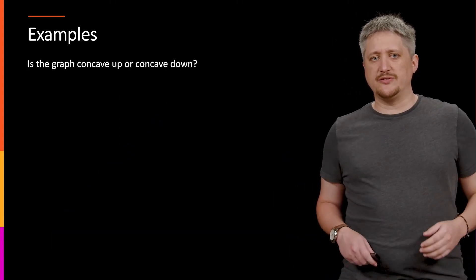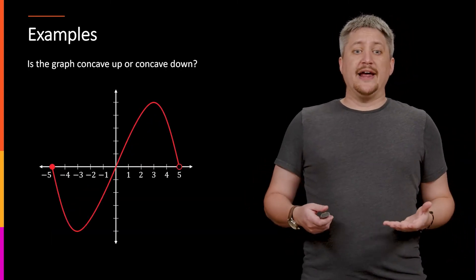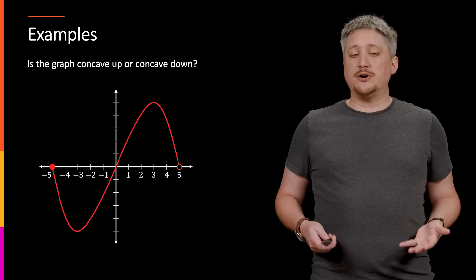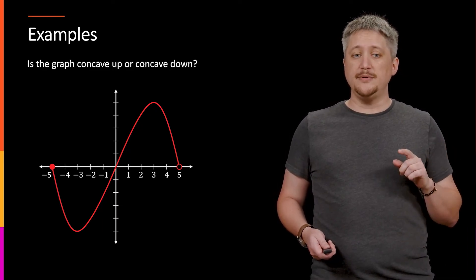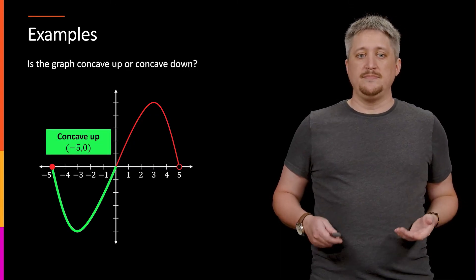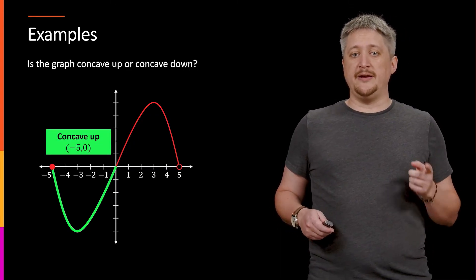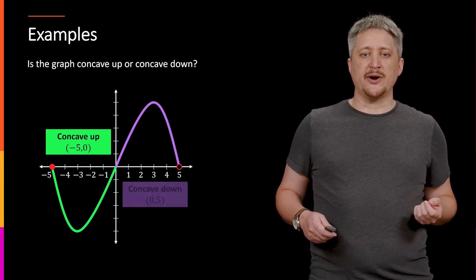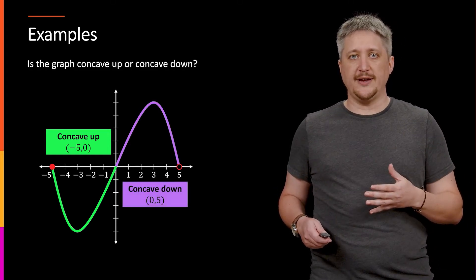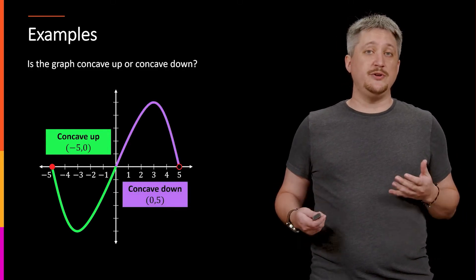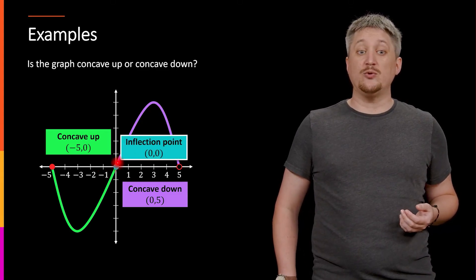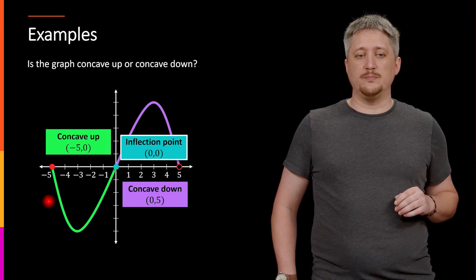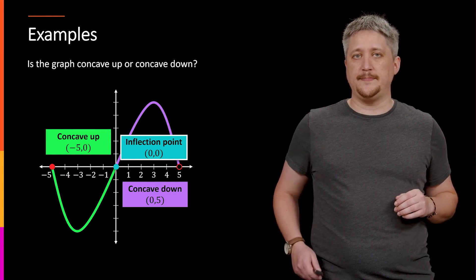What about inflection points? We can have a graph with two different parts. If I look at the left part, this thing is clearly trying to bend up — so on the left, I am concave up. Likewise, on the right, I'm trying to bend down, so to the right I'm concave down. Where it transitioned between those two is an inflection point. The inflection point occurs at the origin in this case, because it's between where it was concave up and then concave down.